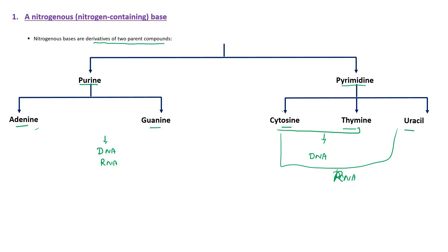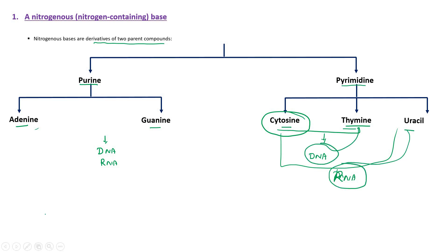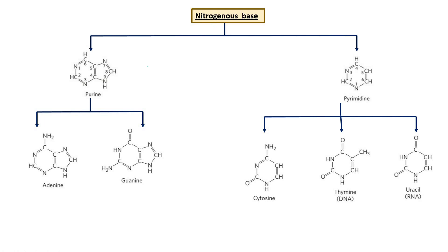So cytosine is present in both DNA and RNA. Thymine is only present in DNA. Uracil is present only in RNA. Both purines and pyrimidines are heterocyclic rings — meaning the ring contains more than one type of atom: carbon and nitrogen.